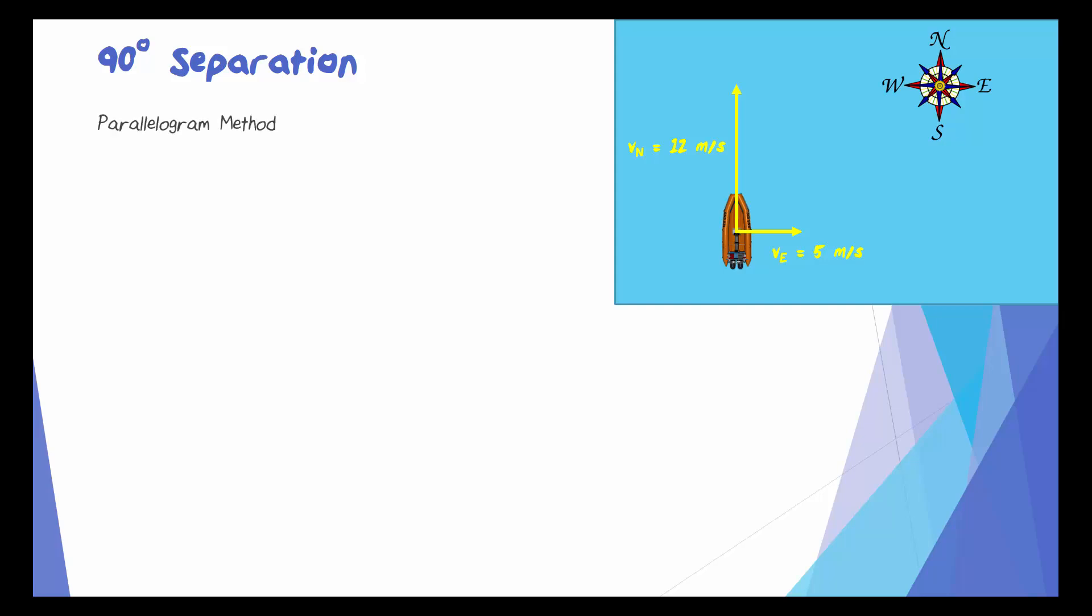Here's where we introduce the parallelogram method. This is a very useful and not too complicated method outlined by Isaac Newton about how to combine vectors. Here are the rules. First of all, the component vectors must originate at the same point. And you can see here they do.